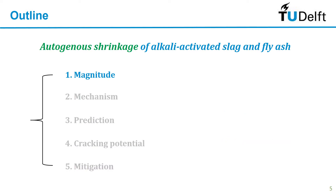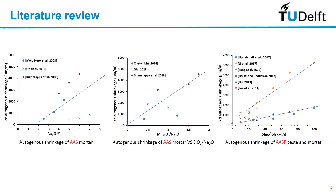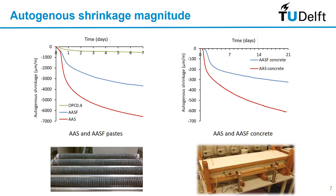First is magnitude. From the literature we know that the autogenous shrinkage of slag and fly ash based systems will increase with the slag content and also increase with the alkali and silicate contents — basically the more alkali you use, the higher shrinkage you will get. This is also what I found from my experiments. The alkali-activated slag system shows higher autogenous shrinkage than the blending system, but even the blending system shrinkage is still higher than that of Portland cement, not only at paste scale but also at concrete scale.